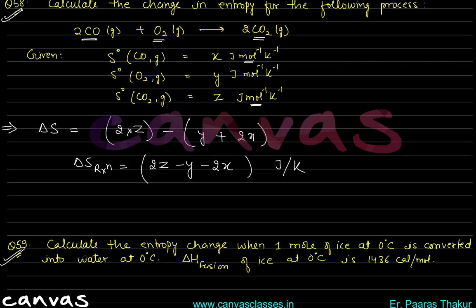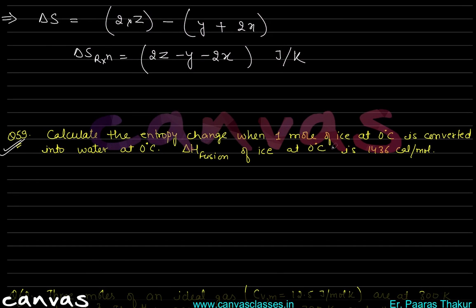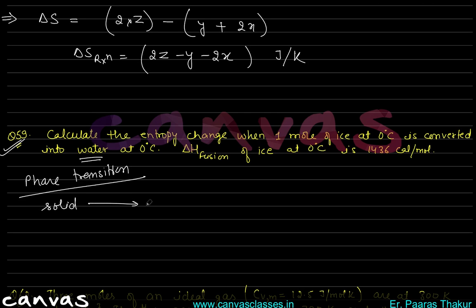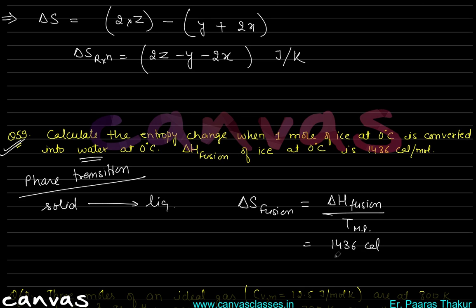Question 59: calculate the entropy change when 1 mole of ice at 0°C is converted into water at 0°C. This is a phase transition question — going from solid state directly to liquid state. So it is delta S fusion = delta H fusion divided by melting point temperature. The value of delta H given is 1436 calories, temperature is 273 Kelvin, so you can calculate the answer.